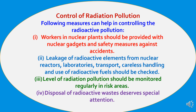Measures to control radiation pollution include: workers in nuclear plants should be provided with nuclear safety gadgets and safety measures against accidents; leakage of radioactive elements from nuclear reactors, laboratories, transport, and careless handling and use of radioactive fuel should be checked; levels of radiation pollution should be monitored regularly in risky areas; and disposal of radioactive waste deserves special attention.